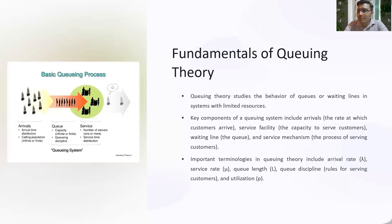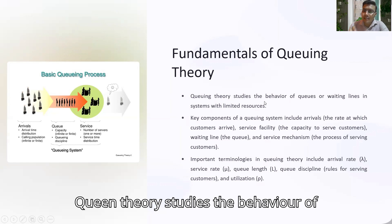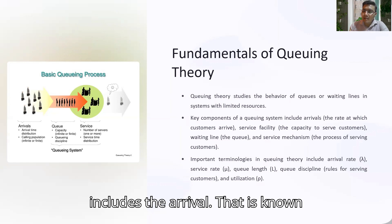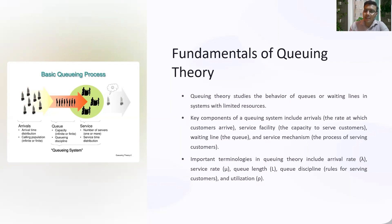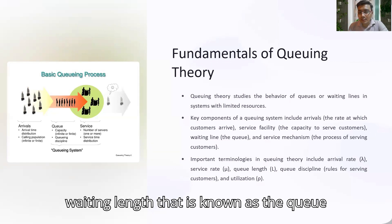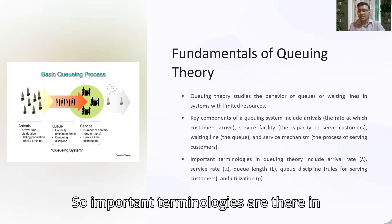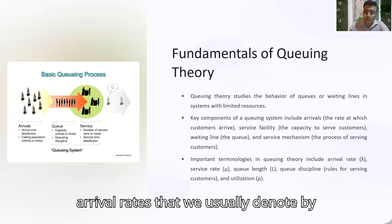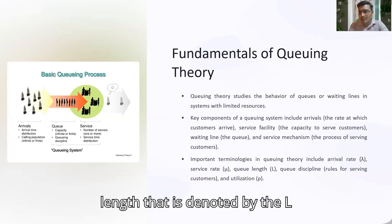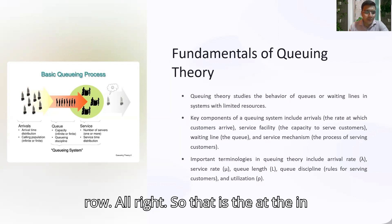The fundamentals of queuing theory: queuing theory studies the behavior of queues and waiting lines in systems with limited resources. Key components of a queuing system include the arrival rate, service facilities, the capacity of the servers, customers, queue length, and the service mechanism. Important terminologies include arrival rate (denoted by lambda), service rate (denoted by mu), queue length (denoted by L), queue discipline — the rule of serving customers — and utilization (denoted by rho).